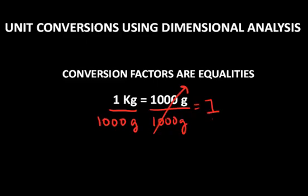I'm left with a per expression, 1 kilogram per 1,000 grams equals 1. So I can use this value, 1 kilogram per 1,000 grams, as a unit factor for doing conversions.